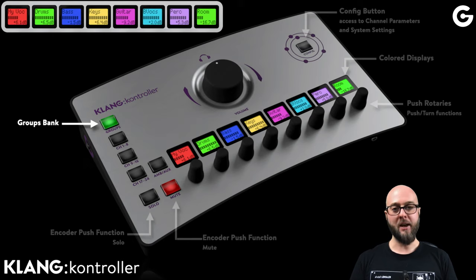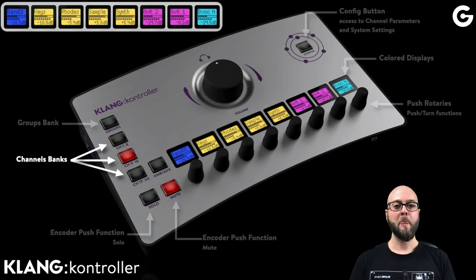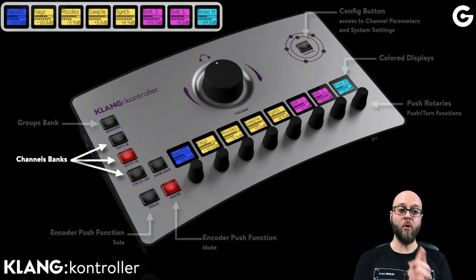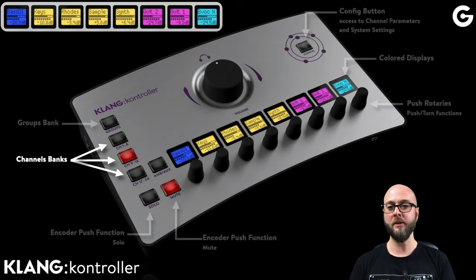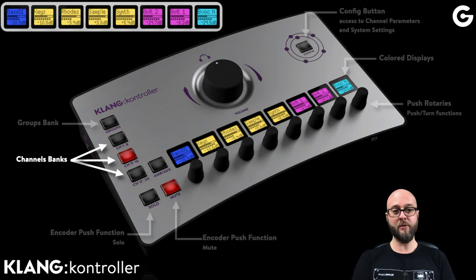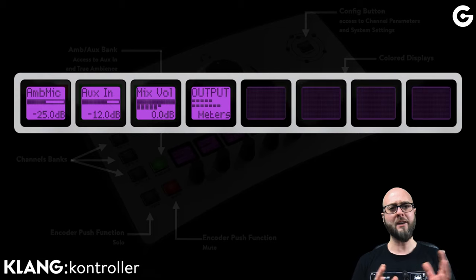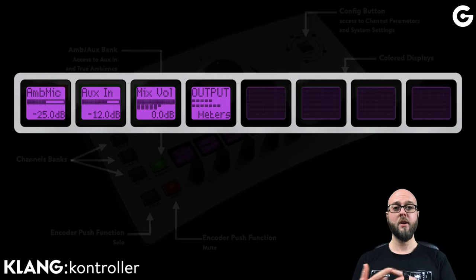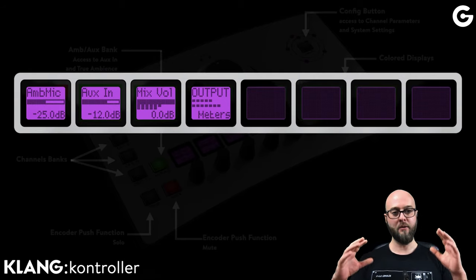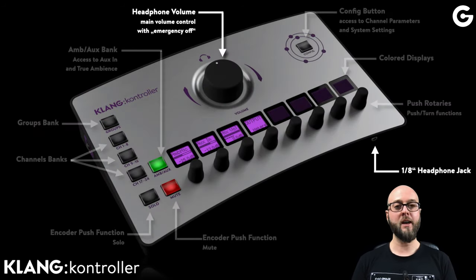On the left-hand side, there are five bank selector keys, starting with the groups bank, which gives us access to eight DCA groups on our Klang processor. The channel banks give us access to 24 mono or stereo channels. For example, with a DMI Klang with 64 inputs, each musician can choose their favorite 24 channels to directly mix on the surface. Finally, we have the ambience and aux bank, which combines the local ambience, the True Ambience, the local aux in, and the mix from our Klang processor — all going to the headphone amp, controlled by the main volume button.